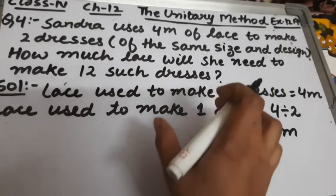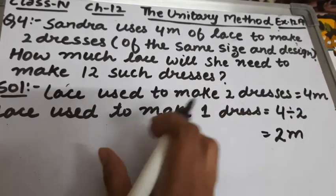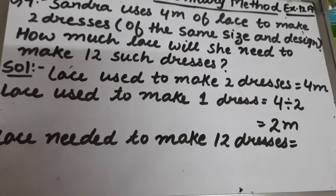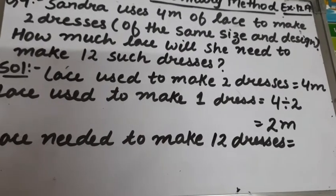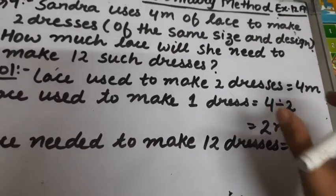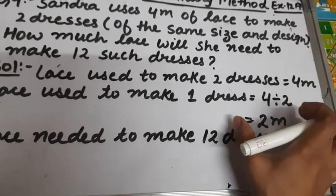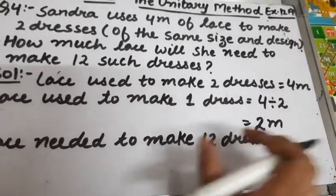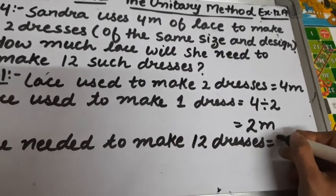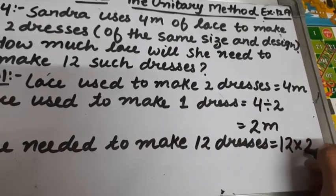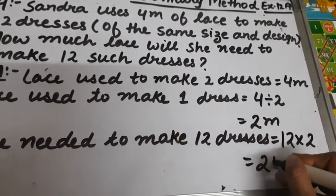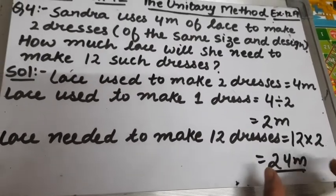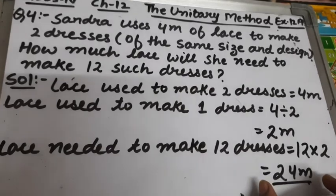We have to find how much lace she will need to make 12 such dresses. Lace needed to make 12 dresses will be: we multiply lace used to make 1 dress by 12. So this will be 12 multiplied by 2, which is 24 meters. So lace needed to make 12 dresses is 24 meters.